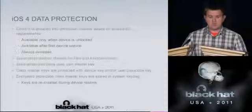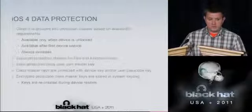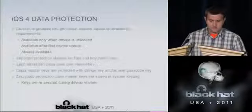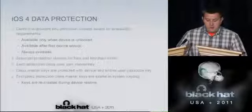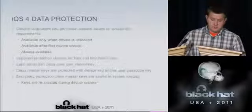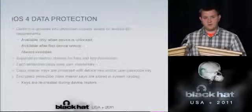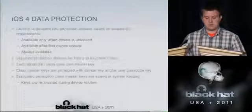The accessibility domains are: data available only when the device is unlocked; data available only after the device was unlocked for the first time; data available until the device is switched off or reset; and data available at all times regardless of lock state. There are separate protection classes for user files and for key chain items. Each protection class uses its own encryption key — the master key for that class — which is stored in the system key bag and protected with the device key, which is unique to the device, and optionally with the passcode key.